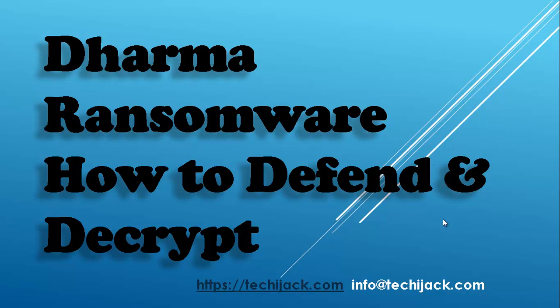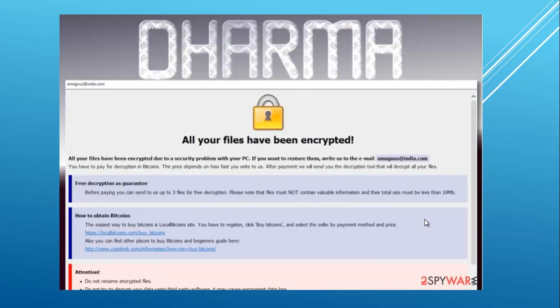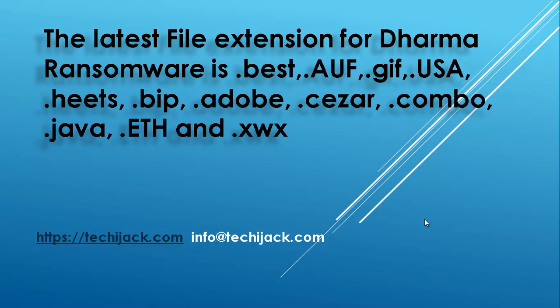One of the high-profile attacks was in November 2018 where Dharma ransomware infected a hospital in Texas by encrypting their records. Though they were able to recover their data without paying, the ransomware usually uses a new method — using a software installation as a distraction to hide its malicious code. The latest file extensions it uses are .best, .auf, .gif, .usa, .heats, .bip, .adobe, .cezar, .combo, .java, .eth, and .xwx.